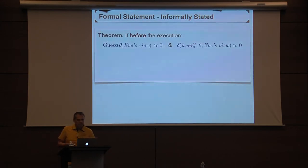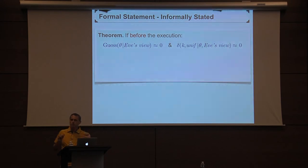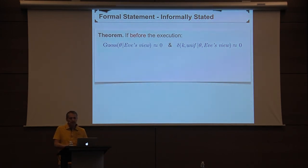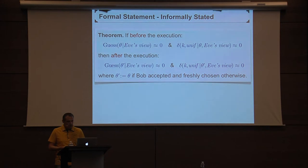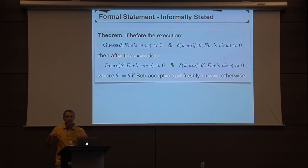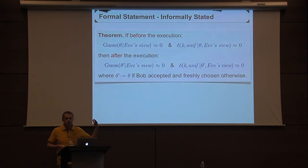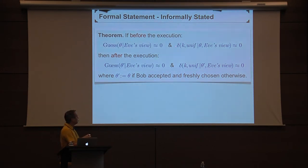The formal statement we prove — slightly informally stated — is: if before the execution we have the following security property on the key: the guessing probability on theta from Eve's perspective should be small, and k should be close to uniformly random, then this also holds after the execution of the scheme. After execution, we look at theta prime — the possibly refreshed version of theta, equal to theta if Bob accepted and freshly chosen otherwise. So we have an invariant kept alive over all executions, ensuring k stays close to uniformly random and does its job as a MAC key.